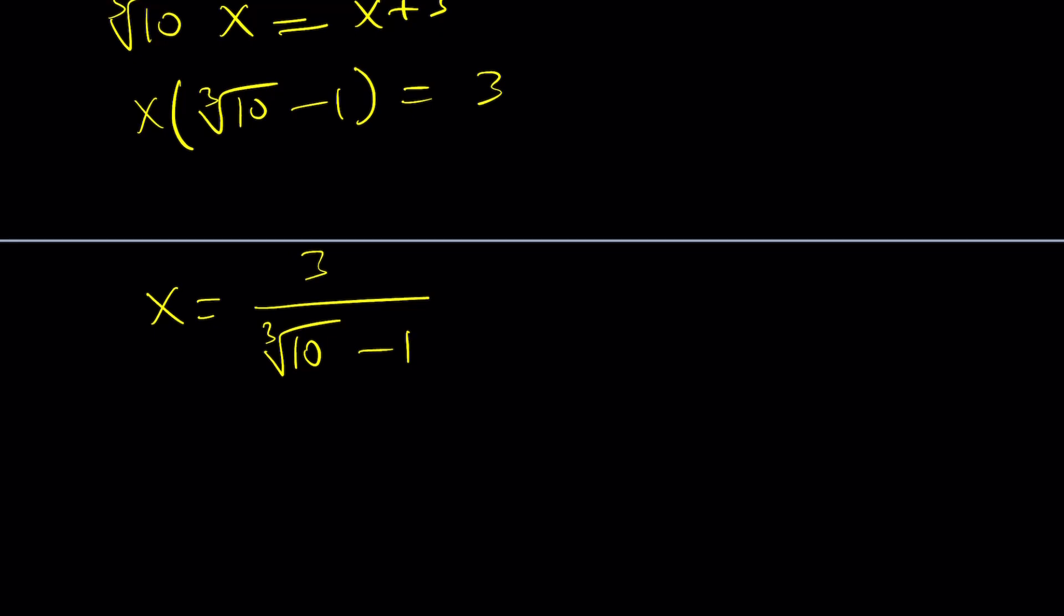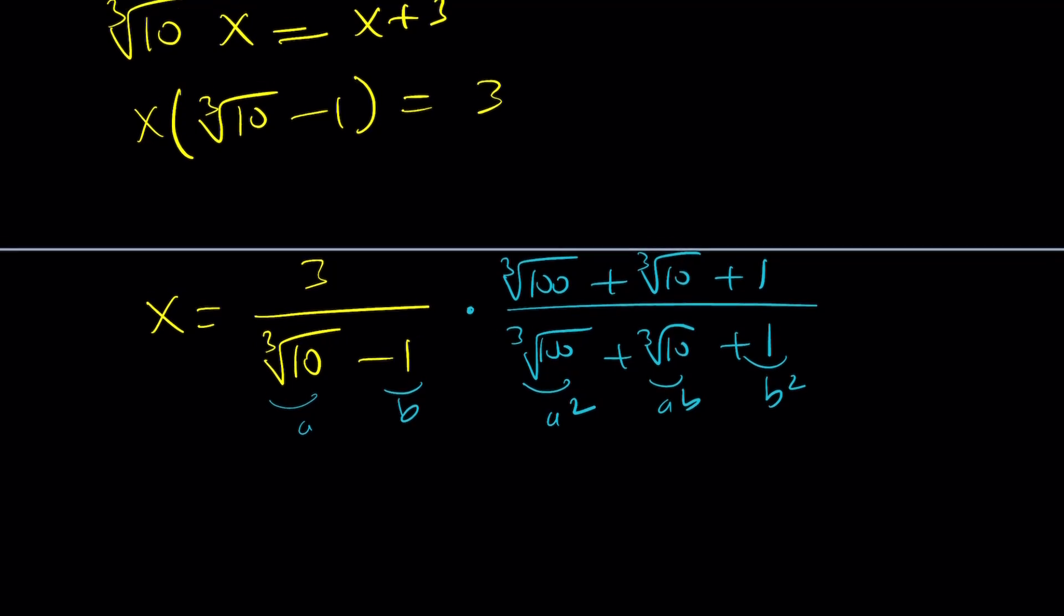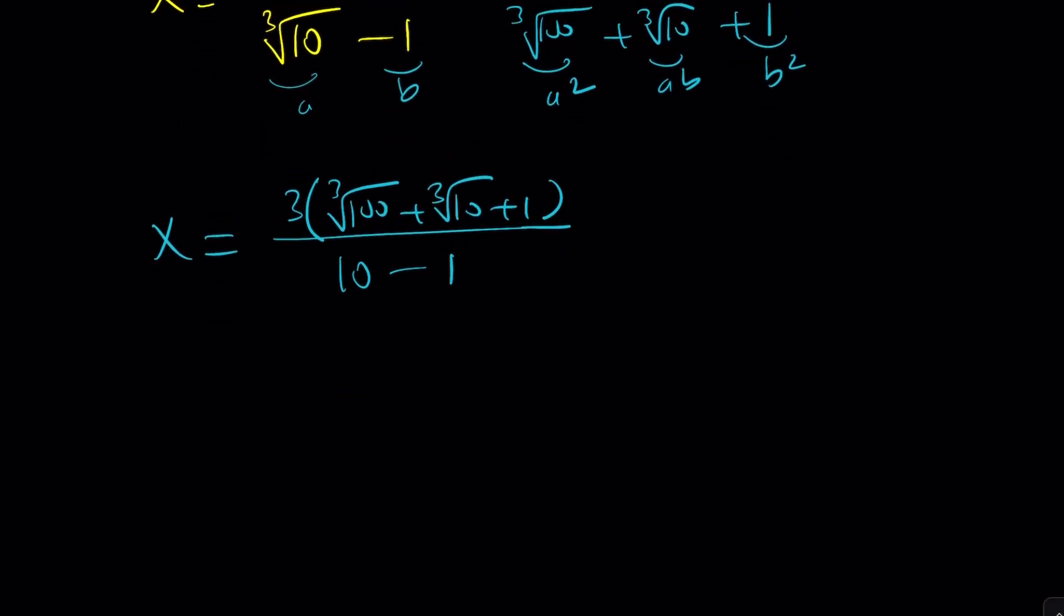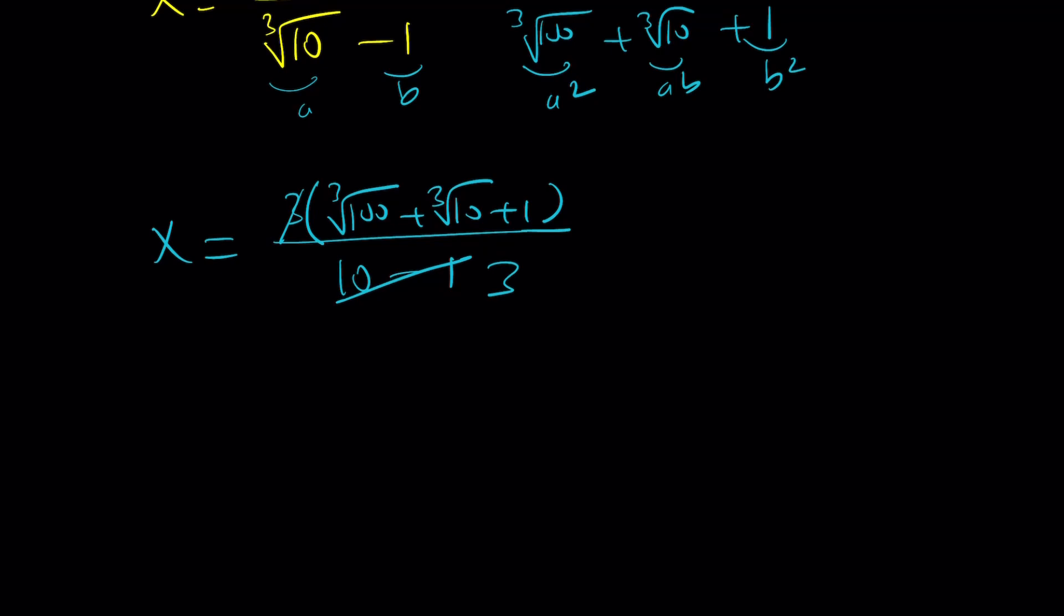So, we're going to multiply by something. How do you rationalize this? Think of it as a minus b and think of a cubed minus b cubed. So, it's going to be cube root of 100 plus cube root of 10, which is the a squared plus a b plus b squared. And then, you're going to do it at the bottom too. But when you multiply these two things at the bottom, a minus b times a squared plus a b plus b squared is going to give us a cubed minus b cubed, which is 10 minus 1. And in the numerator, we're going to get the following. And notice that 10 minus 1 is 9. So, 3 goes into 9 three times. And yay, we got the same answer. This is the real deal.